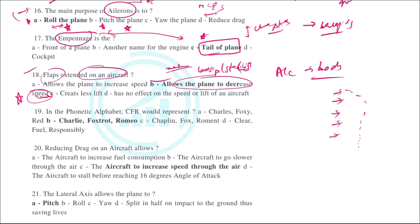In the phonetic alphabet, CFR would represent Charlie, Foxtrot, Romeo. We have a dedicated chapter on phonetic alphabet, so the answer is Charlie, Foxtrot, and Romeo.